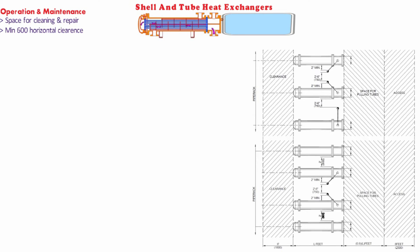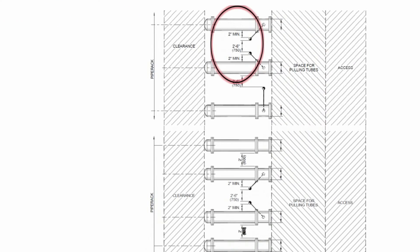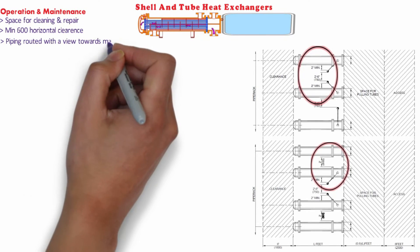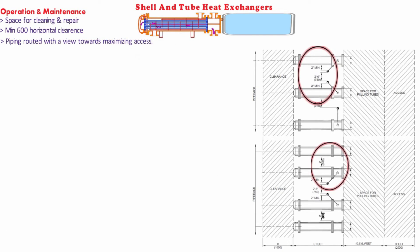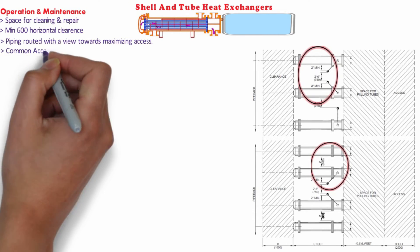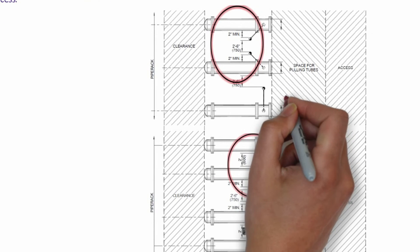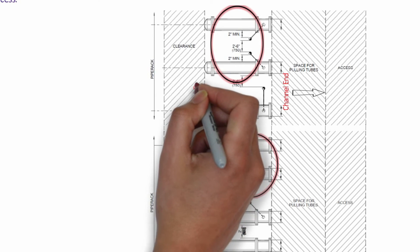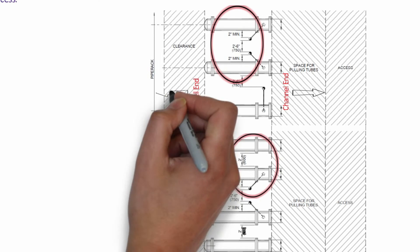The first picture shows the arrangement of exchangers with 2 feet 6 inches operating space between piping. The second picture shows the arrangement of exchangers with 2 feet maintaining space between paired units and 2 feet 6 inches space between piping. Exchangers should have piping routed with the view towards maximizing access to the tube bundle and other maintainable components. The removal space should be reserved in the model. The channel ends of the exchanger should face the local access road for tube bundle removal and the shell cover should face the pipe rack. Pulled out bundle should not extend over the main access road.